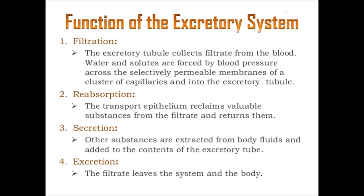The functions of the excretory system involve four major headings. The first is filtration. The excretory tubule — the pipe or tunnel through which urine is transferred — collects filtrate from the blood. Water and solutes are forced by blood pressure across the selectively permeable membranes of a cluster of capillaries and into the excretory tubule. Blood pressure helps the toxicated blood to rush through the kidney pipe, surpassing a selectively permeable membrane through which osmosis takes place.